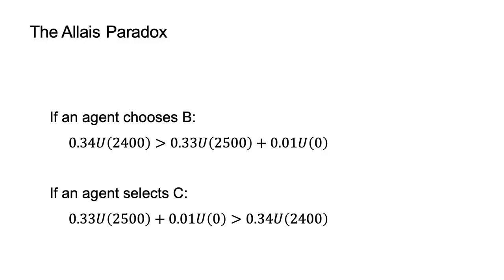This is a contradiction. The two inequalities point in opposite directions. Under expected utility theory, if an agent chooses A, it should choose C. And if the agent chooses B, it should choose D.